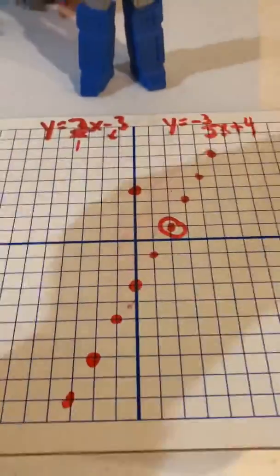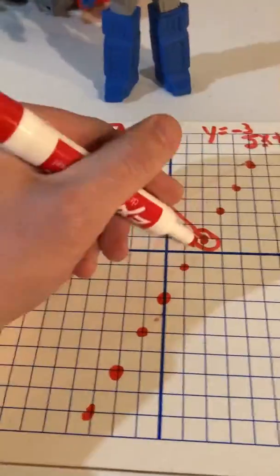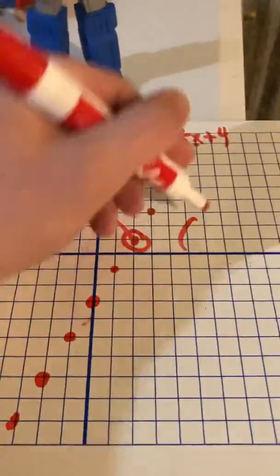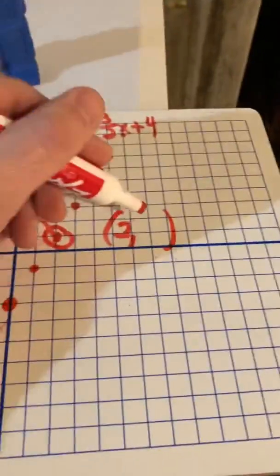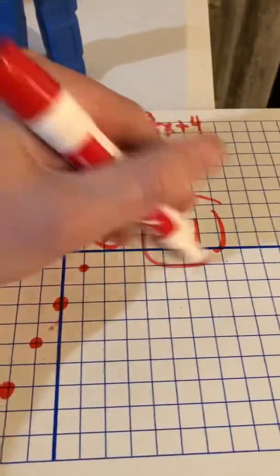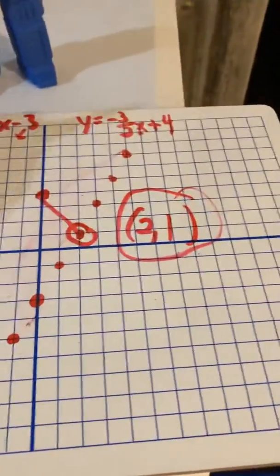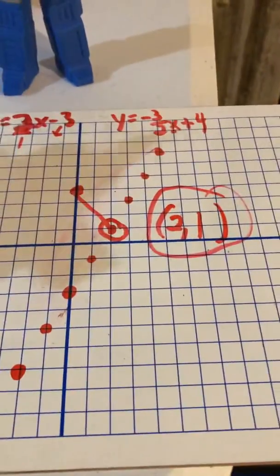So I'm looking for that hit of where the two lines would cross. And where they cross, so it's an xy point. So my x is 2 and my y is 1. So the solution to this one right here would be 2, 1. Alright, hope that helps.